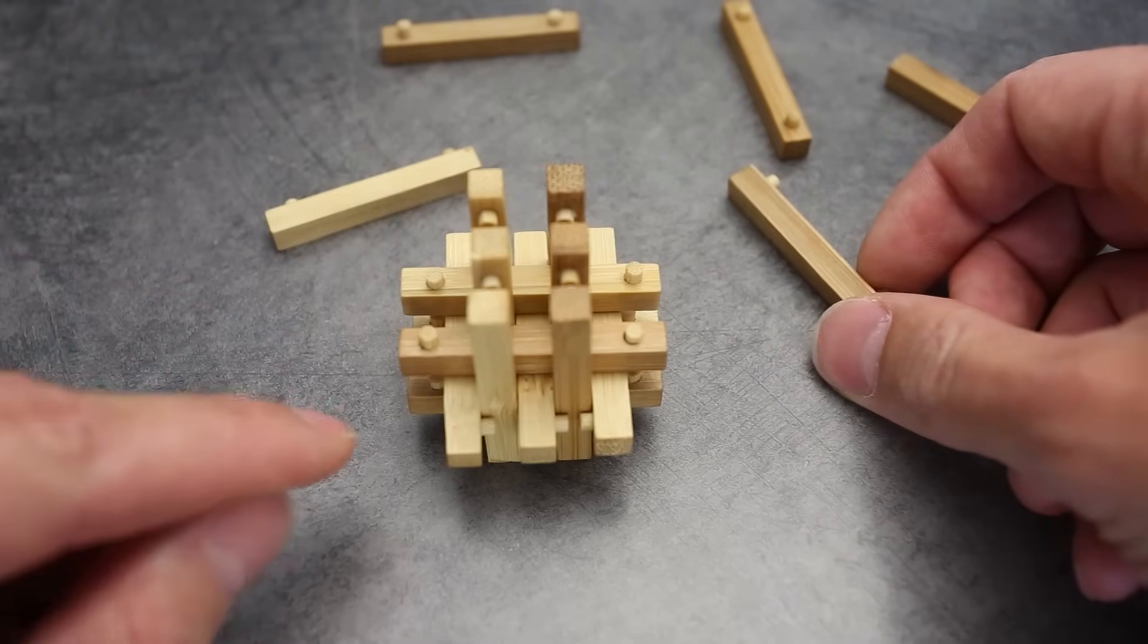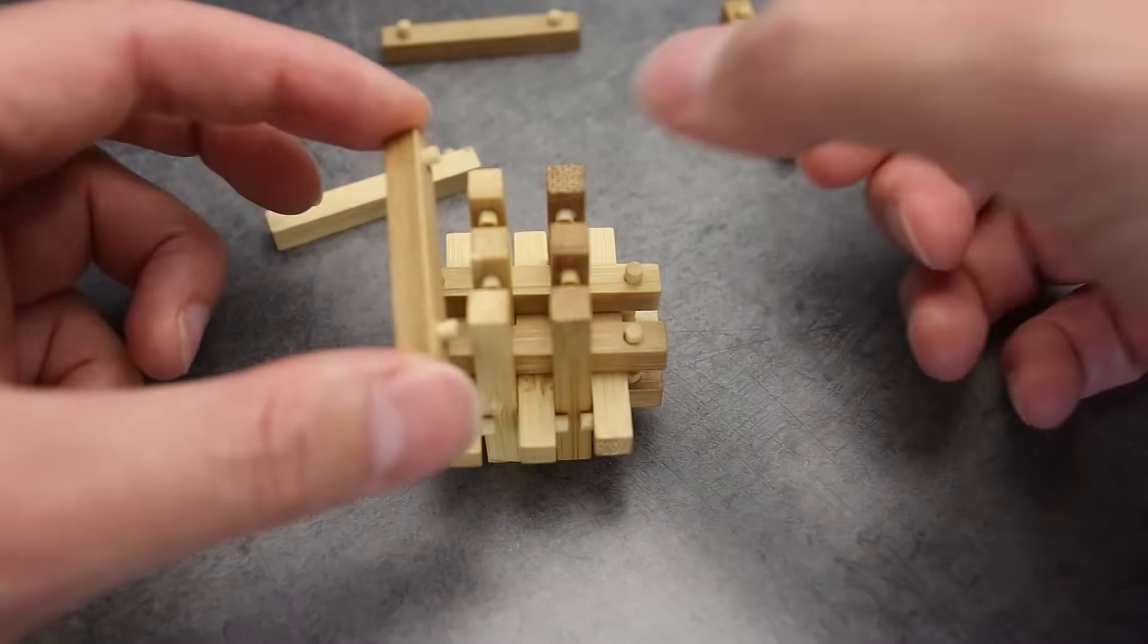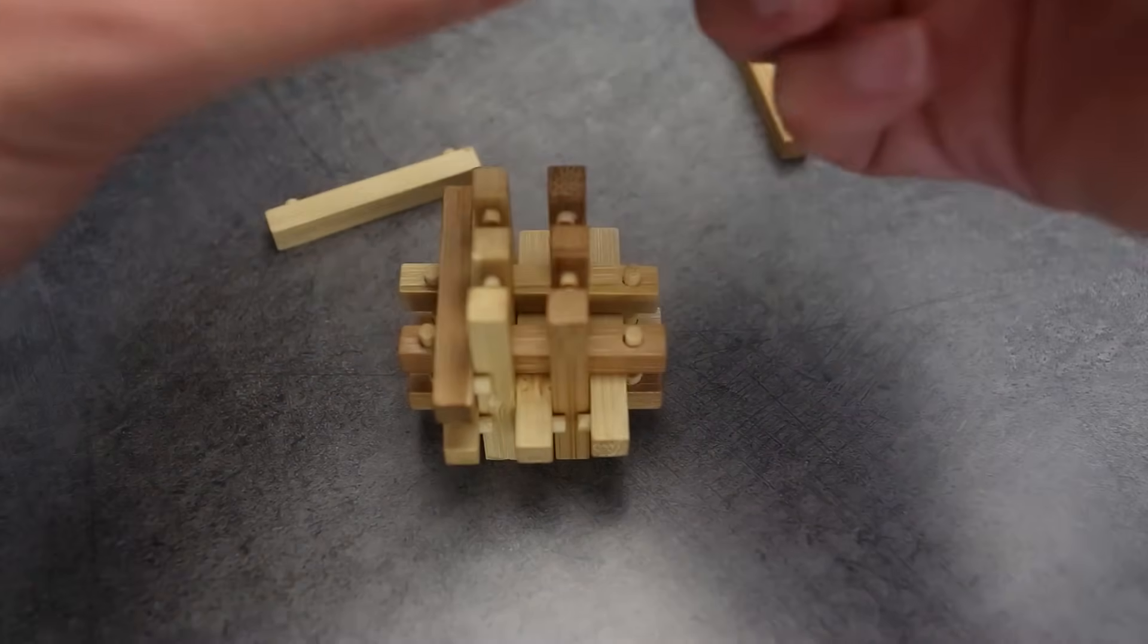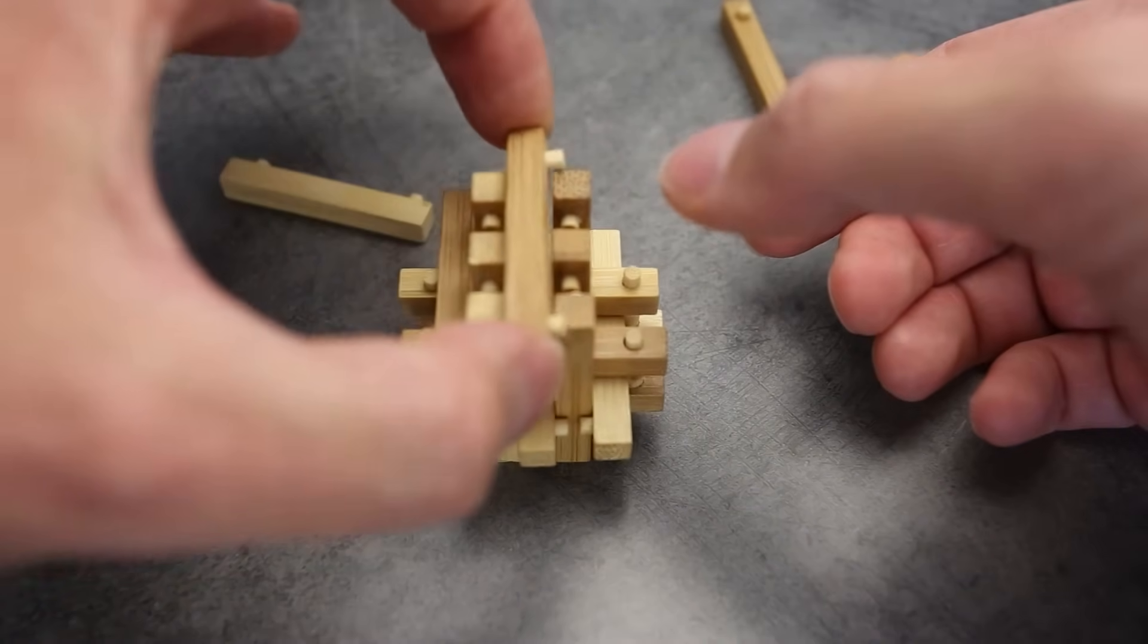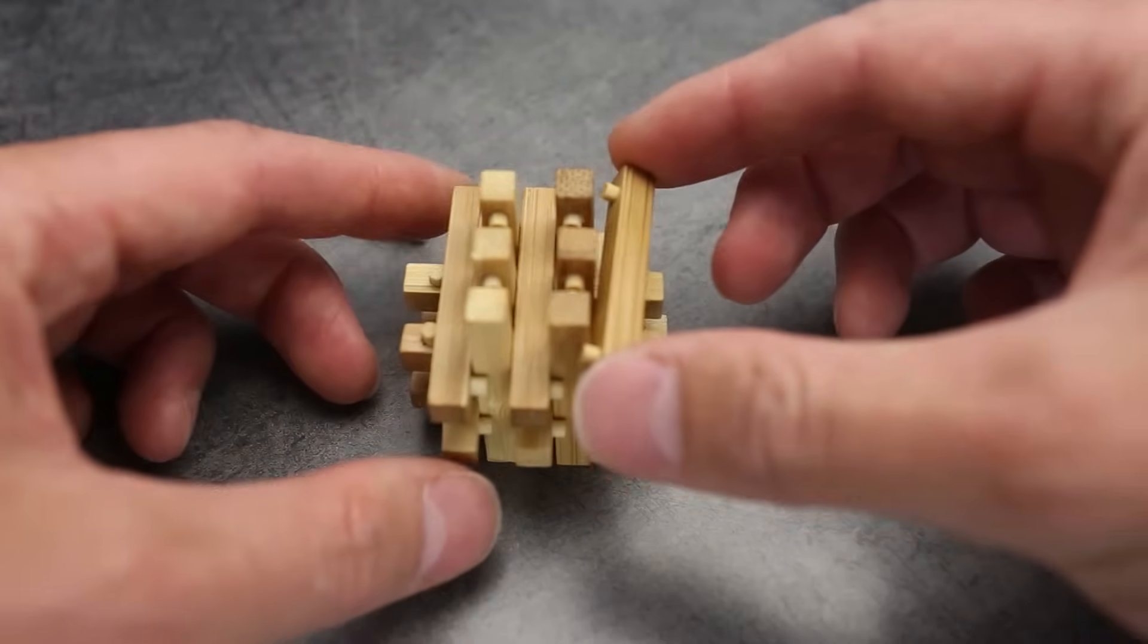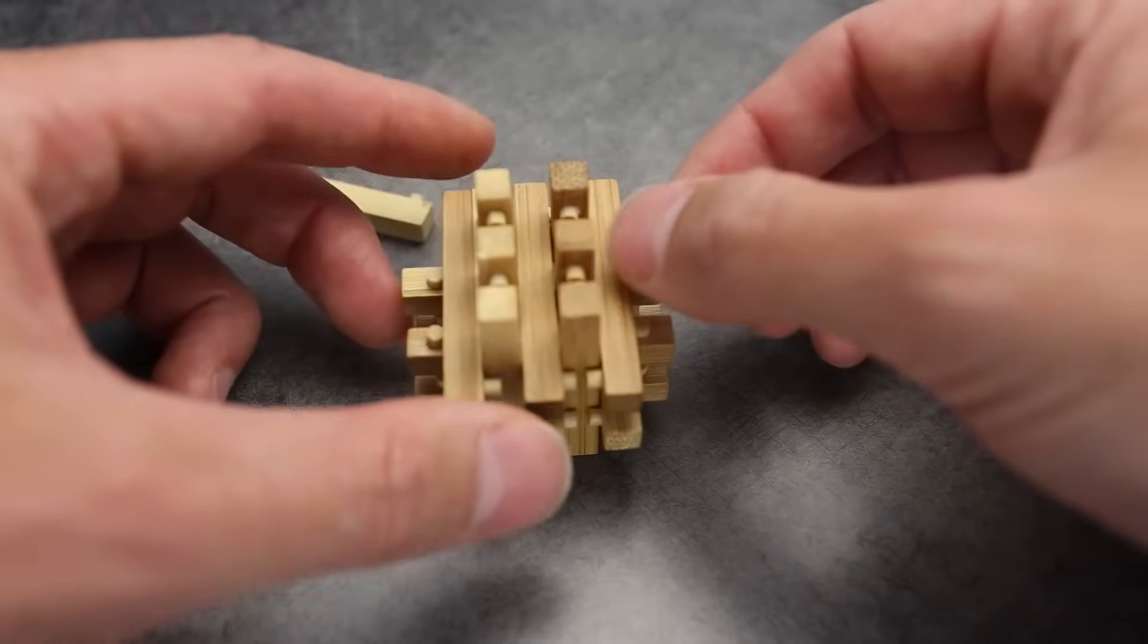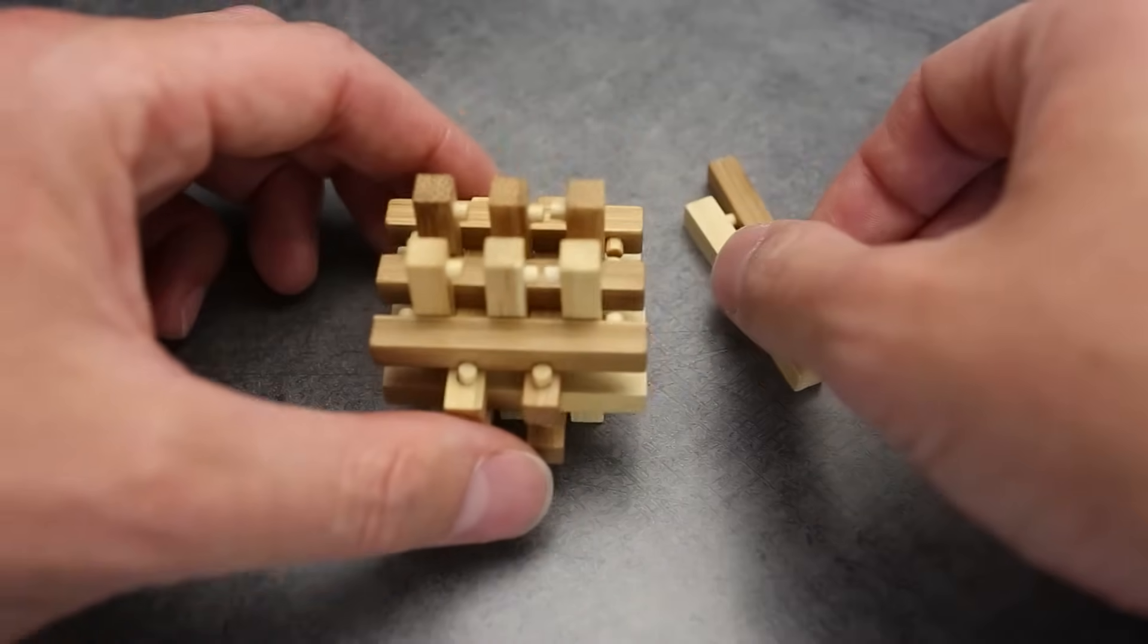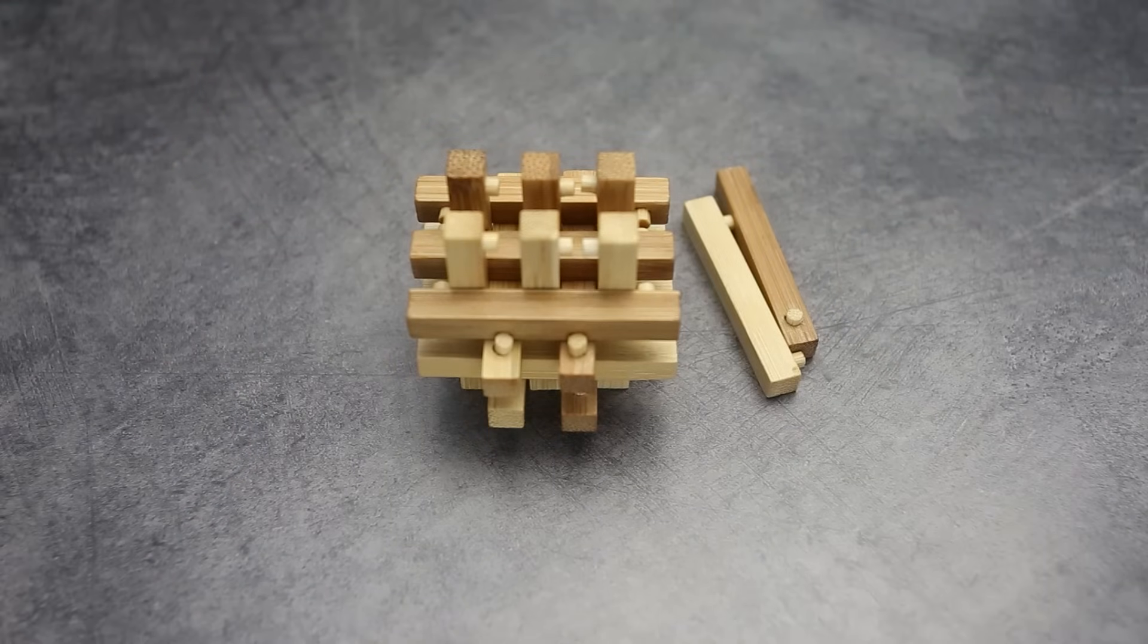Now we have to put one more row. Going to be this one, this one, this one in the middle, and this one. Okay. Now we have only two parts to assemble.